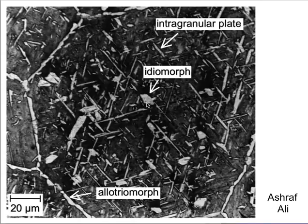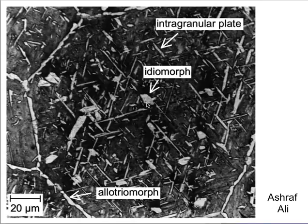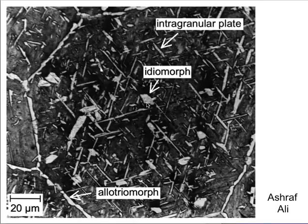In order to get intragranular nucleation you need to have a large austenite grain size, otherwise the most favorable site for nucleation is always the austenite grain surface. There are advantages in having idiomorphic ferrite instead of allotriomorphic ferrite, because you get deflection of cleavage cracks as you go across those, whereas allotriomorphic ferrite tends to give large regions in the same crystallographic orientation. Ignore the intragranular plates - that is intragranularly nucleated Widmanstätten ferrite.